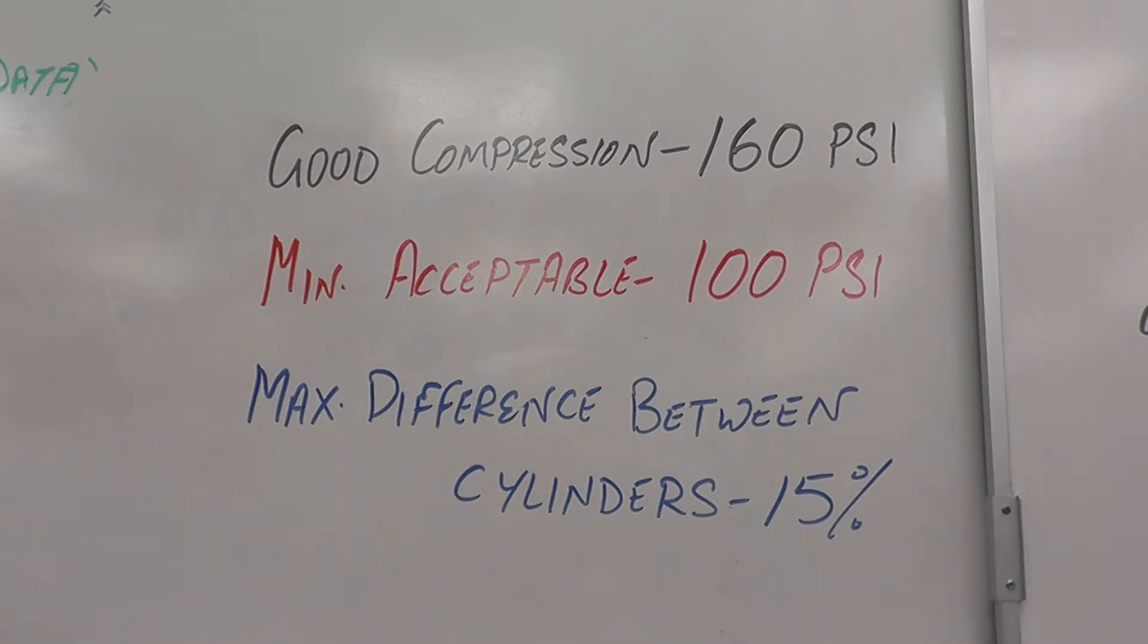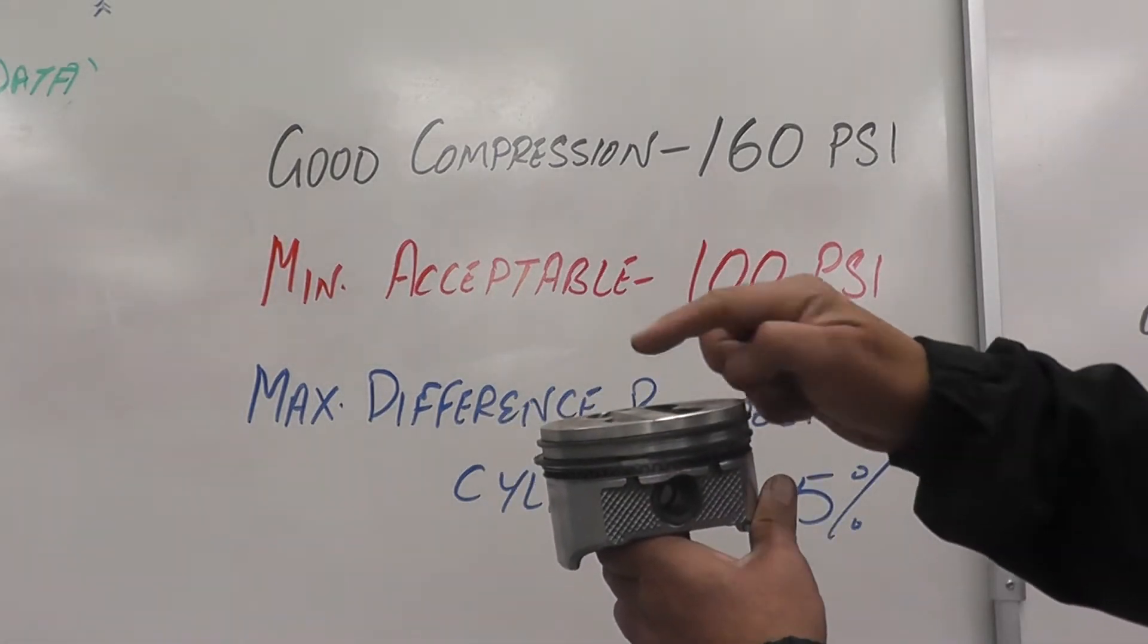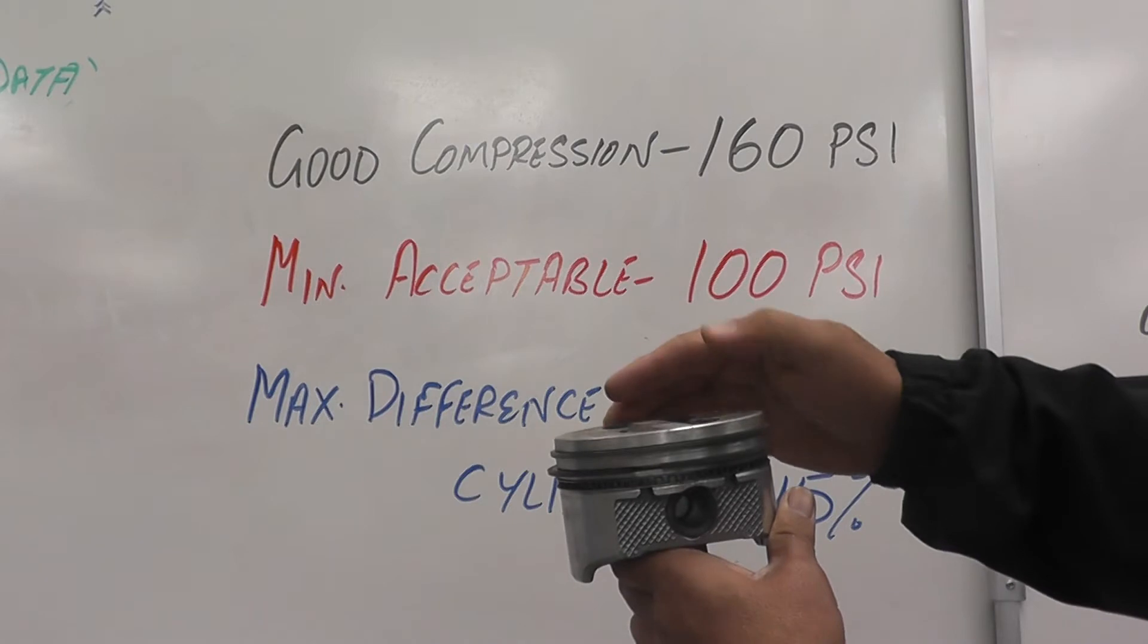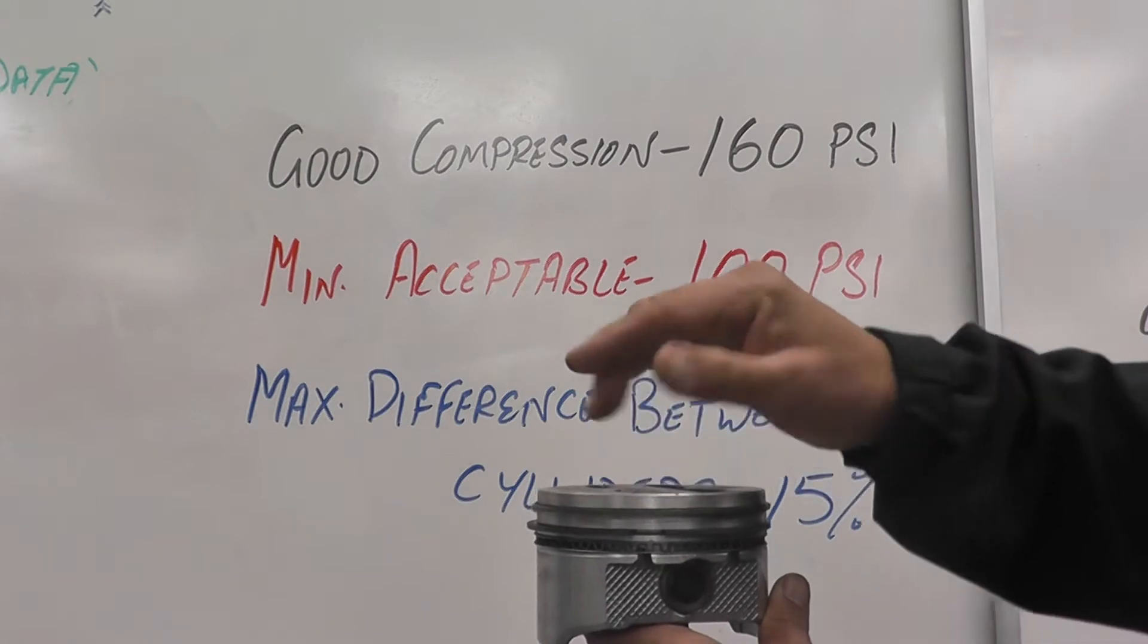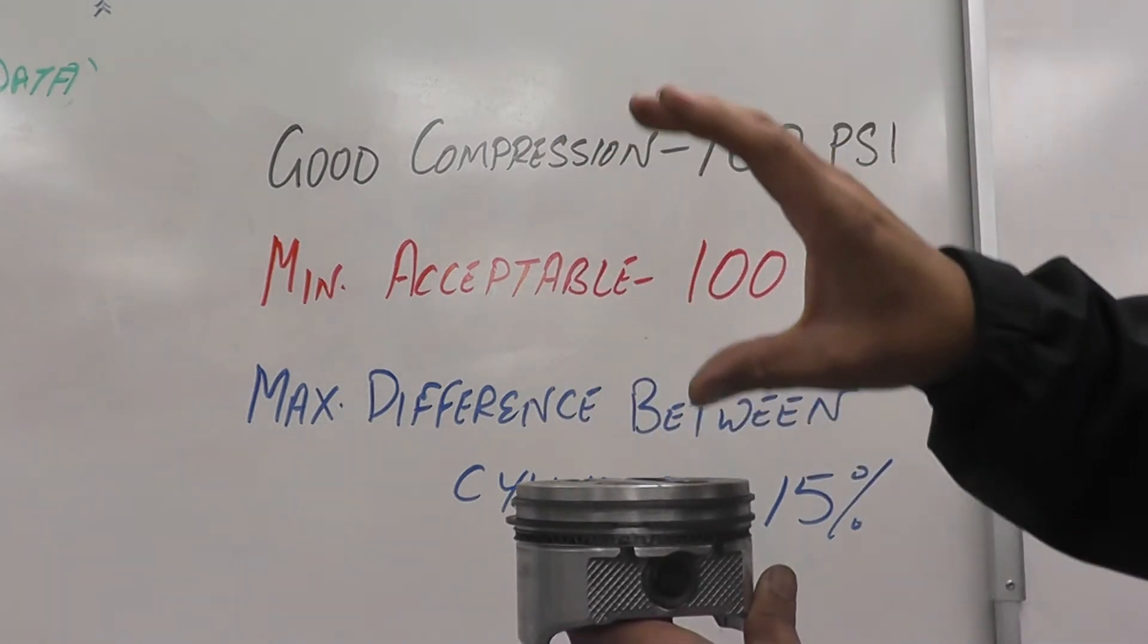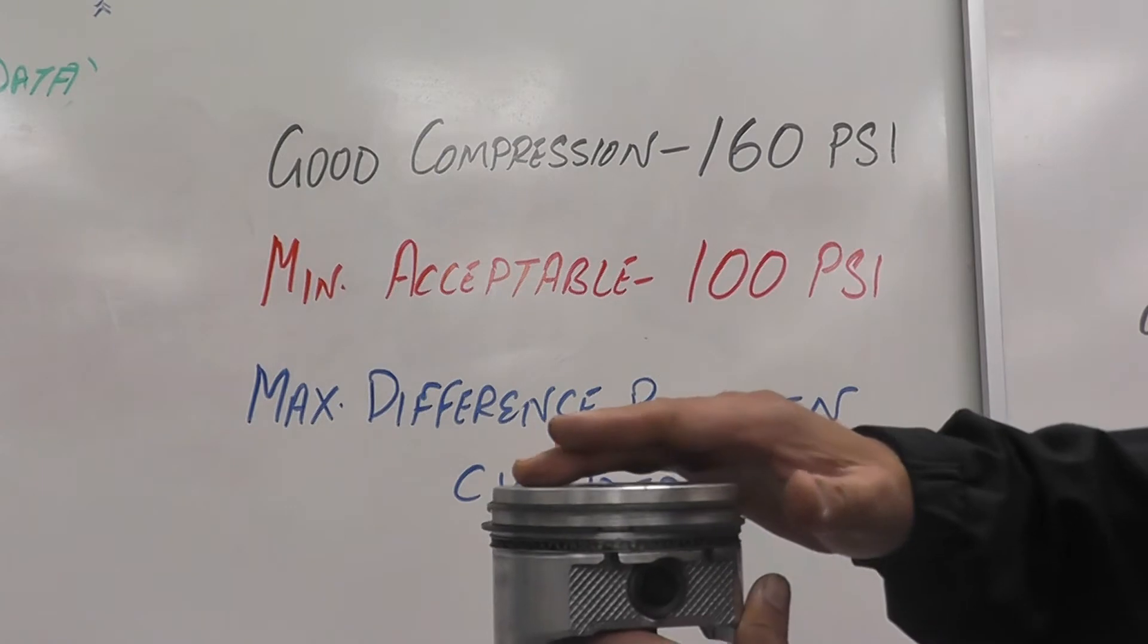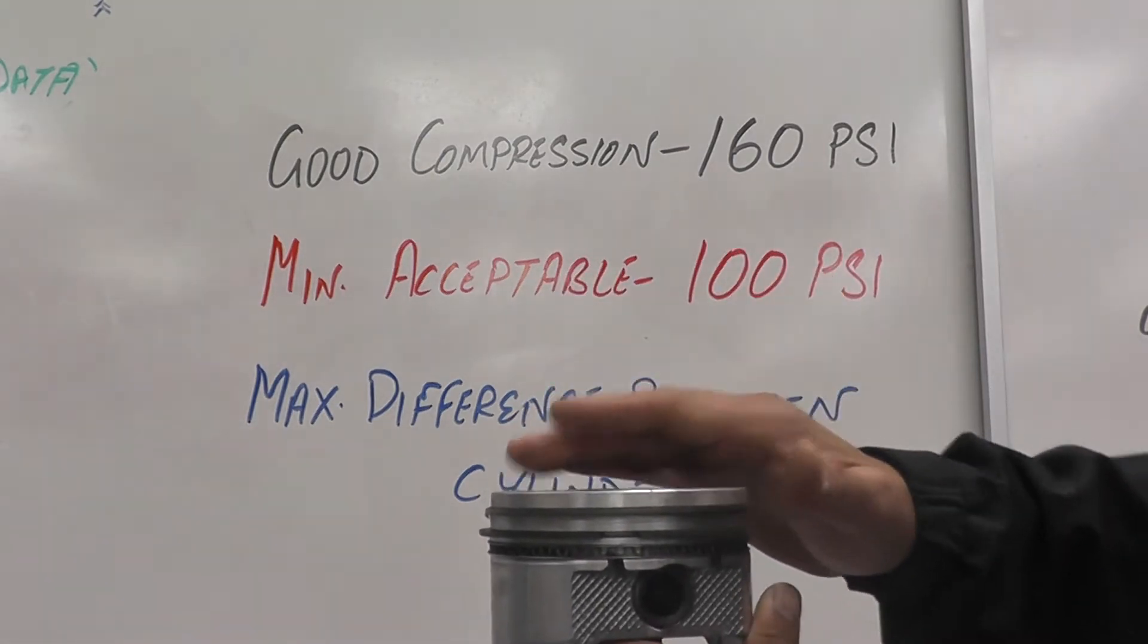When you're doing the compression test on multiple cylinders, there shouldn't be any more than 15% difference in compression. If you have too high of a compression, like 180, and it's just an average engine, not a racing engine, most likely what's happened is there is carbon deposit on the piston. What that carbon deposit does is the volume of the cylinder changes if there is any deposit on the valve or on top of the piston.